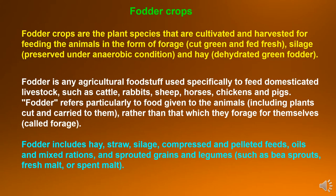Now fodder crops. Fodder crops are the plant species that are cultivated and harvested for feeding the animals in the form of forage like cut greens and fed fresh, or in examples like silage which is preserved under anaerobic condition, and hay which is dehydrated green fodder. Fodder is any agricultural foodstuff used specifically to feed domesticated livestock such as cattle, rabbits, sheep, horses, chickens and pigs. Fodder refers particularly to feed given to animals including plant cut and carried to them, rather than that which they forage for themselves, called forage crops.